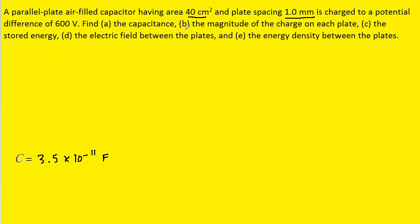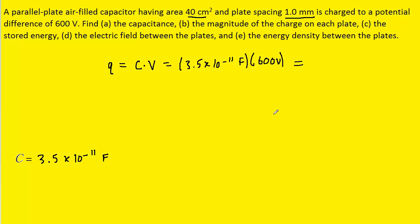Now for part B, to calculate the magnitude of the charge on each plate, we recall that the charge on the plate of a capacitor is equal to its capacitance times the potential difference between the plates. We have already figured out the capacitance in part A — notice we're using the value in farads, because that is the standard unit. The potential difference is stated in the question to be 600 volts. So all we have to do is multiply, and we get 2.1 times 10 to the minus eighth. The standard unit of charge is coulombs.